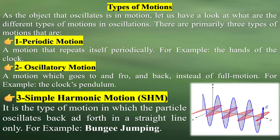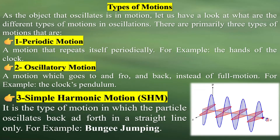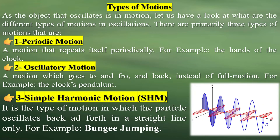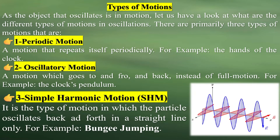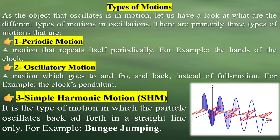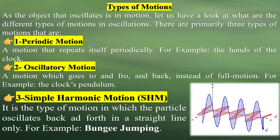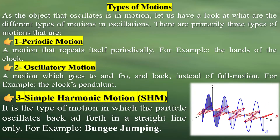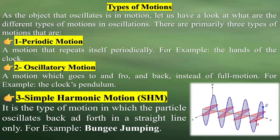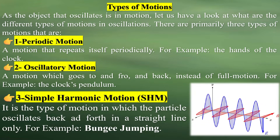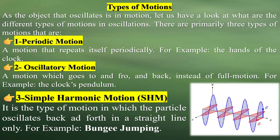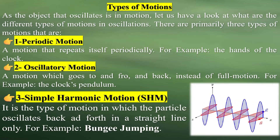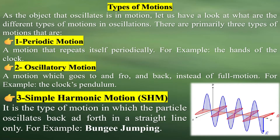Two: oscillatory motion — a motion which goes to and fro and back instead of full motion. For example, the clock's pendulum. Three: simple harmonic motion — the type of motion in which the particle oscillates back and forth in a straight line only. For example, bungee jumping.